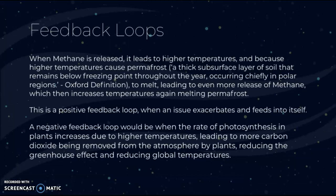Thinking about methane gas release and feedback loops: when methane is released, it leads to higher temperatures because of the greenhouse effect. Those increased temperatures melt permafrost even more. Permafrost is a thick subsurface layer of soil that remains below freezing point throughout the year, occurring chiefly in polar regions. As the permafrost melts, it releases even more methane, which warms the Earth further, melting even more permafrost — creating a positive feedback loop. A positive feedback loop is when an issue exacerbates and feeds into itself, making the problem bigger and bigger.